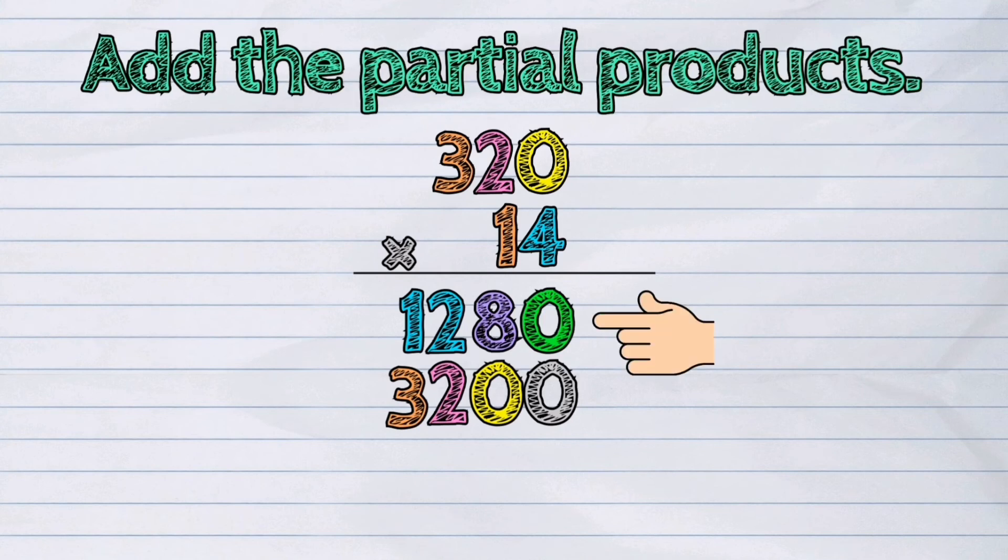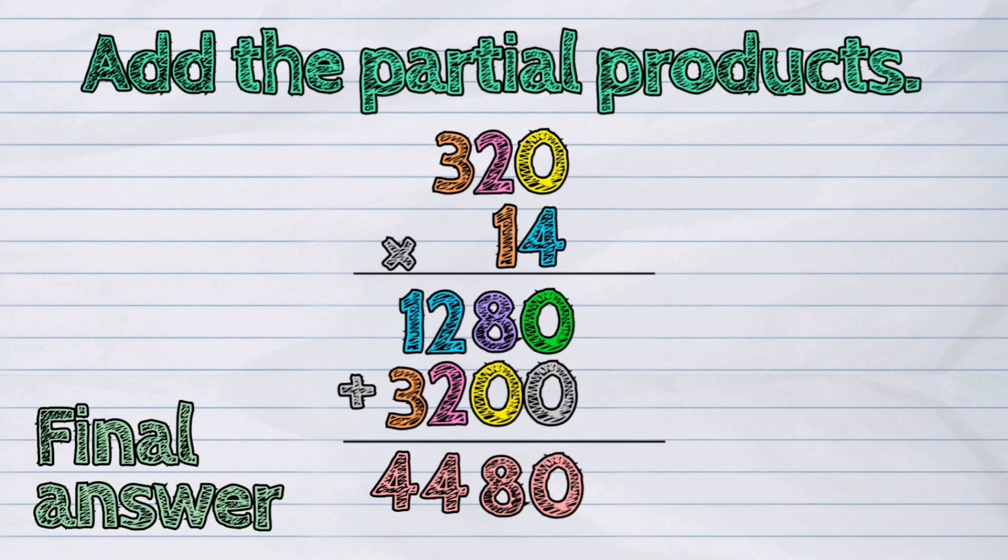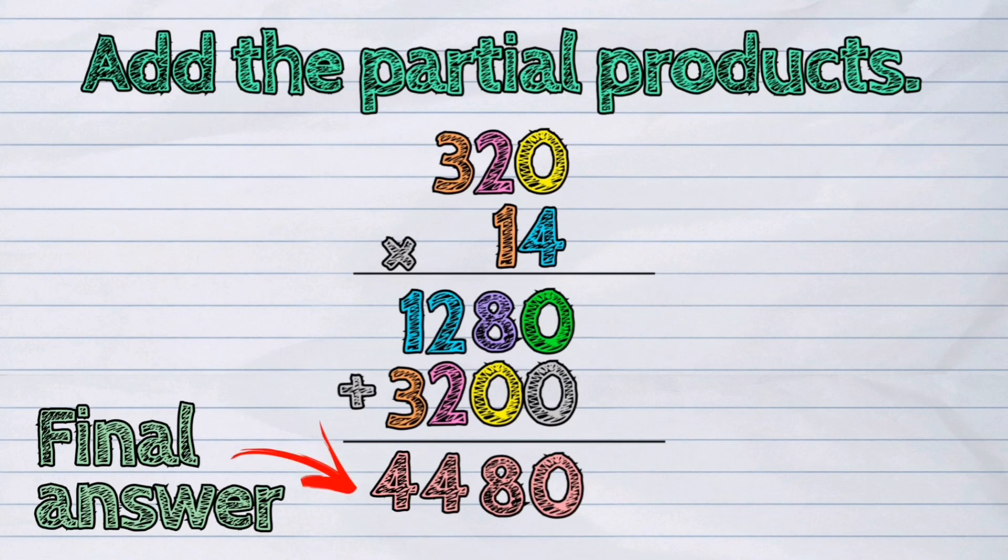Add the partial products. 1,280 plus 3,200. 0 plus 0 is 0. 8 plus 0 is 8. 2 plus 2 is 4. And 1 plus 3 is 4. The final answer is 4,480.